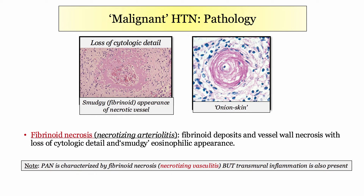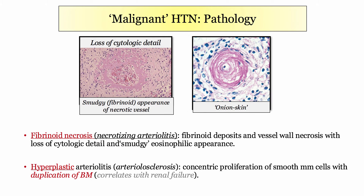Fibrinoid is essentially referring to necrotic tissue. Do not confuse the fibrinoid necrosis of malignant hypertension with that of polyarteritis nodosa. In polyarteritis nodosa, the fibrinoid necrosis may be described as necrotizing vasculitis — again, fibrinoid simply describes a necrotic process. In PAN, however, transmural inflammation will be noted. Returning to the characteristic onion skin lesion, this may be described as hyperplastic arteriolitis or arteriolosclerosis, referring to the concentric proliferation of vascular smooth muscle cells with duplication of basement membrane.